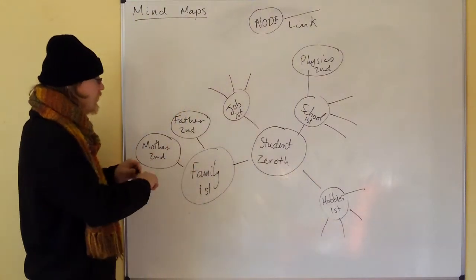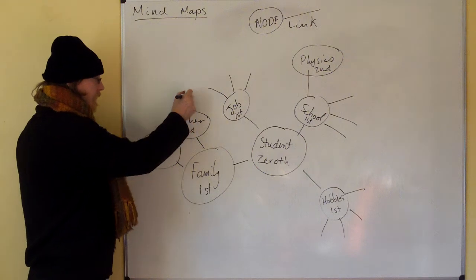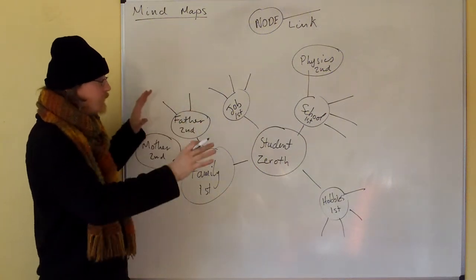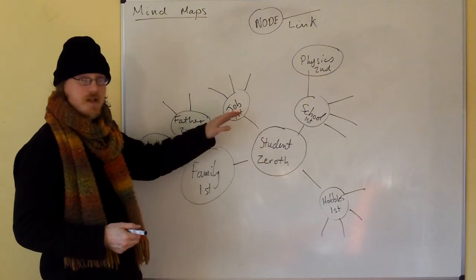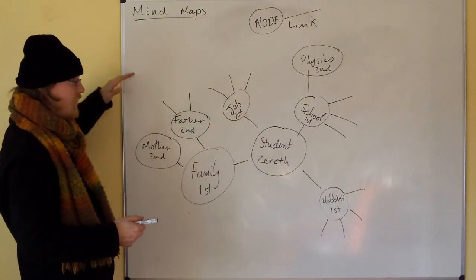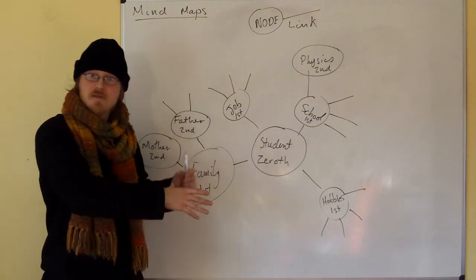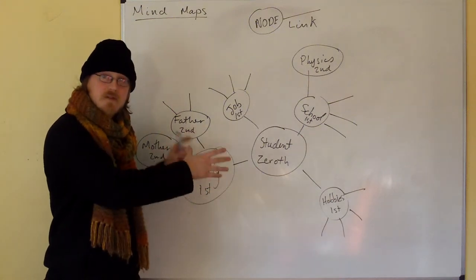Keep going until you get as far out as you can, making zeroth order nodes, first order nodes, second order nodes, third order nodes. Try and get your whole life, or as much of your life as you can, on one piece of paper.